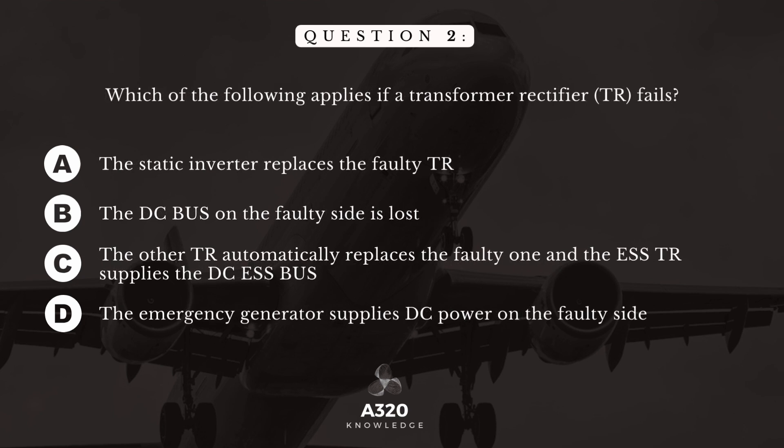Question 2. Which of the following applies if a transformer rectifier fails? A. The static inverter replaces the faulty transformer rectifier. B. The DC bus on the faulty side is lost. C. The other transformer rectifier automatically replaces the faulty one and the essential TR supplies the DC essential bus. D. The emergency generator supplies DC power on the faulty side.